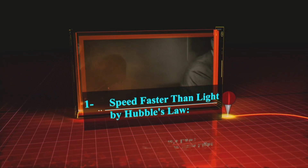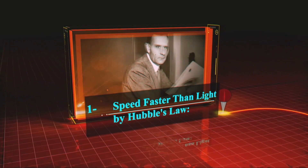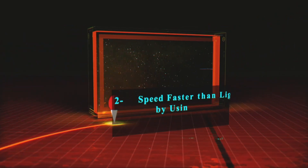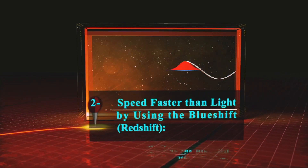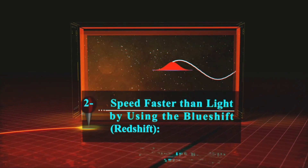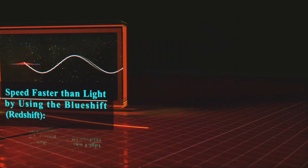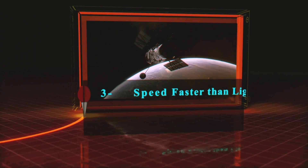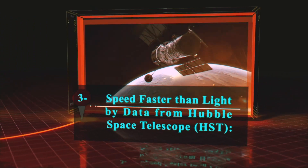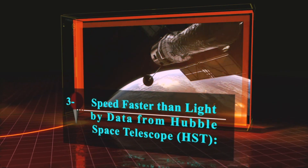1. Speed Faster Than Light by Hubble's Law. 2. Speed Faster Than Light by using the Blue Shift or Red Shift. 3. Speed Faster Than Light by data from the Hubble Space Telescope.